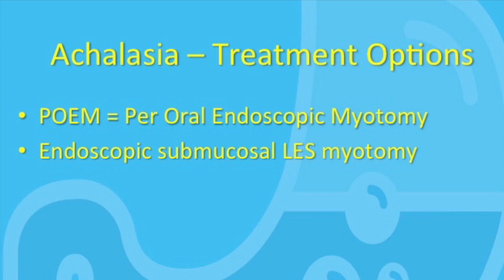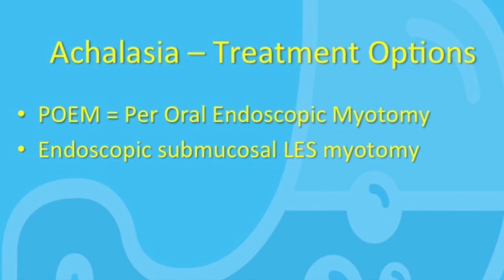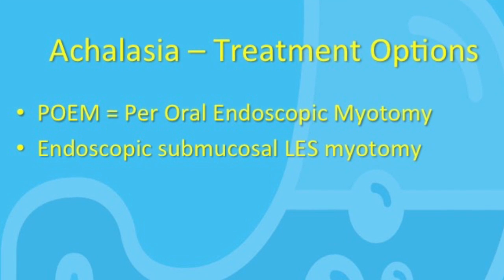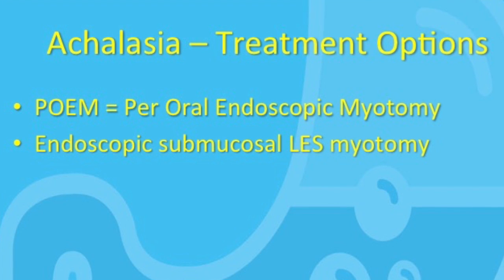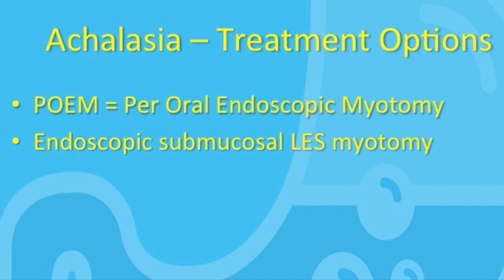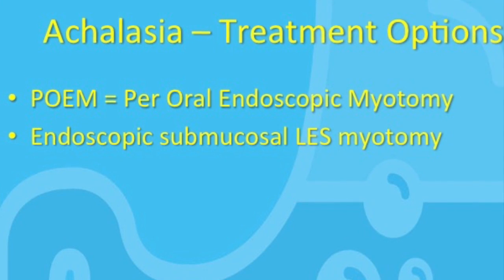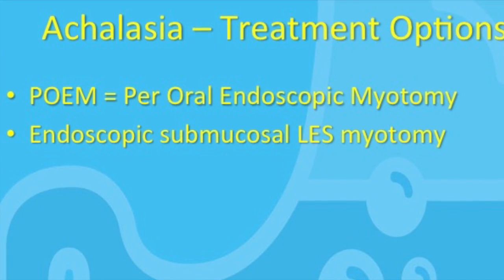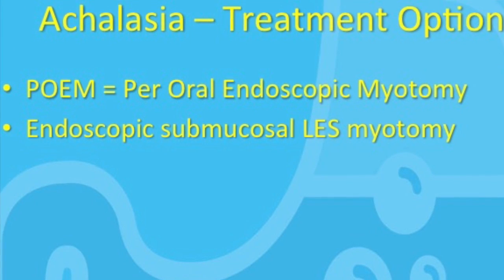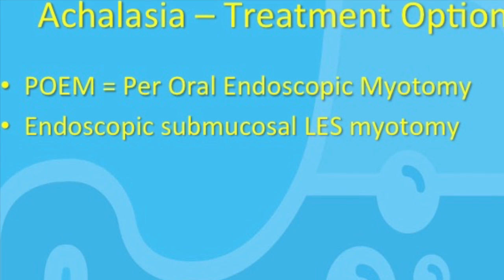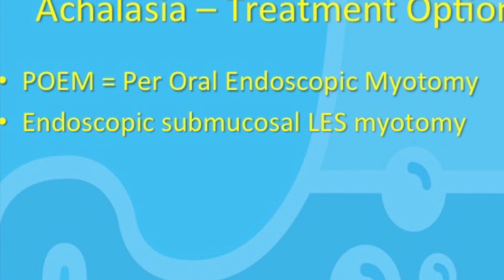Some patients have been asking about the new POEM procedure. POEM is an acronym standing for peroral endoscopic myotomy. Essentially, it does exactly what the Heller myotomy does — meaning it cuts into the lower esophageal sphincter muscle to weaken it — but this is done endoscopically so that there is no surgical scar and the recovery is much quicker. This is still a preliminary treatment and is not widely available, but hopefully we will learn more about it with time.